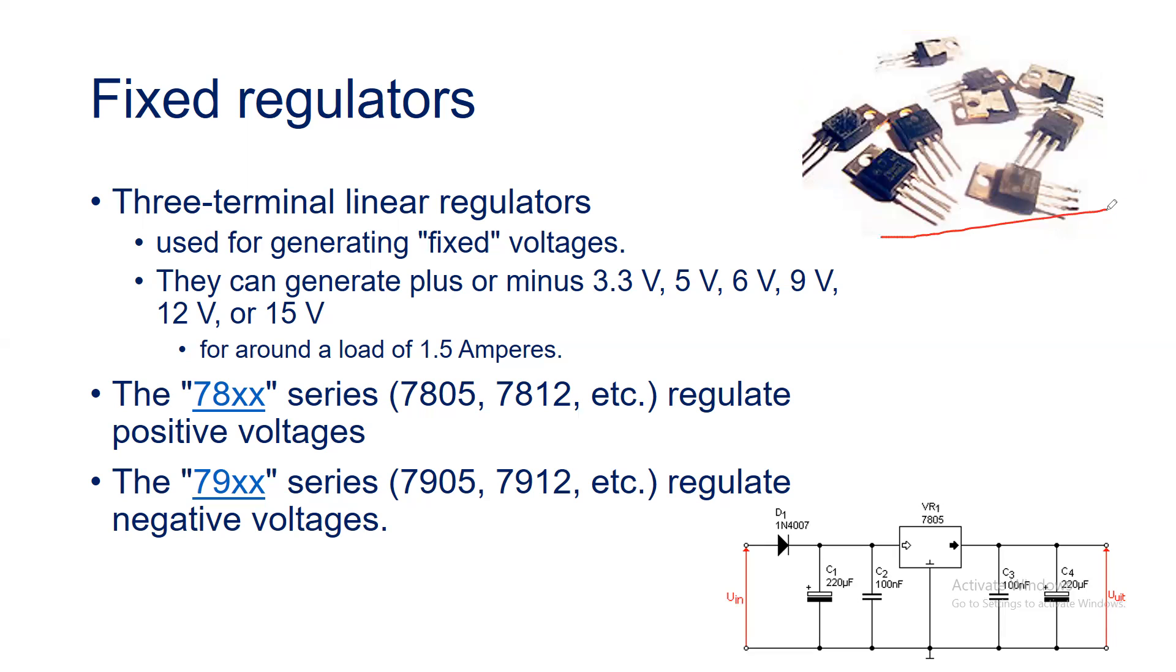They are used to generate fixed voltages and they can generate positive or negative voltages. The typical values of these regulators available in the market are 3.3 volt, 5 volt, 6 volt, 9 volt, 12 volt, and 15 volt. With their peak performance they are able to deliver a load current up to 1.5 amperes. If you want a voltage regulator in this particular range you can choose the linear voltage regulator.